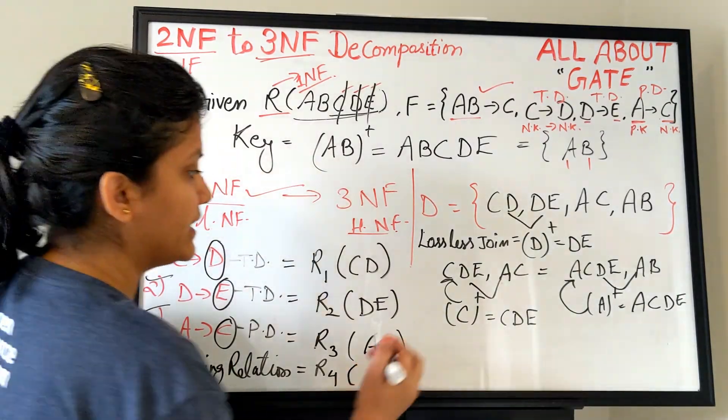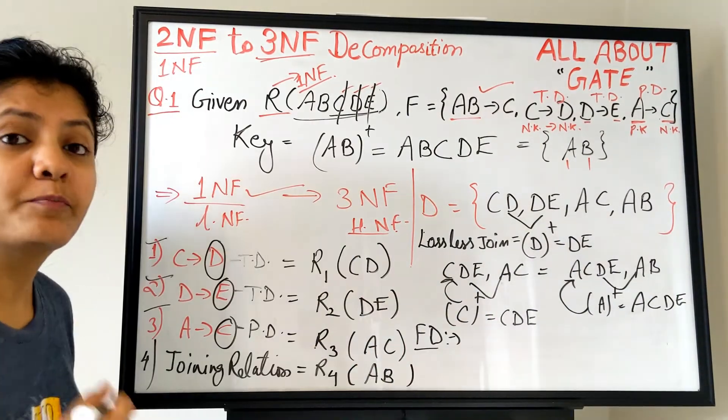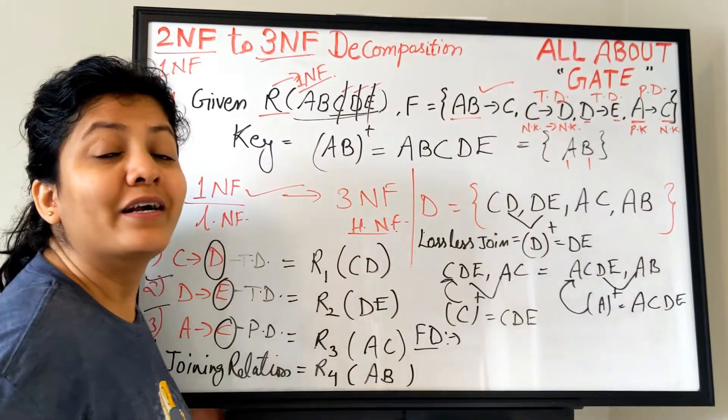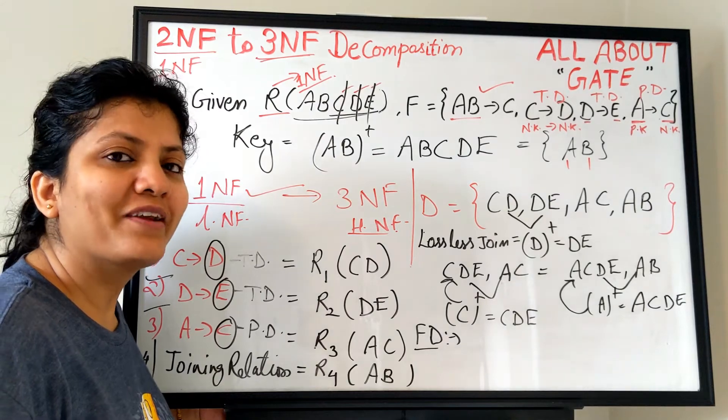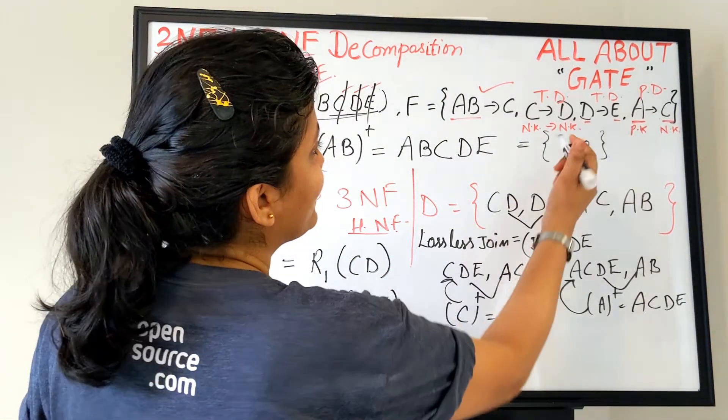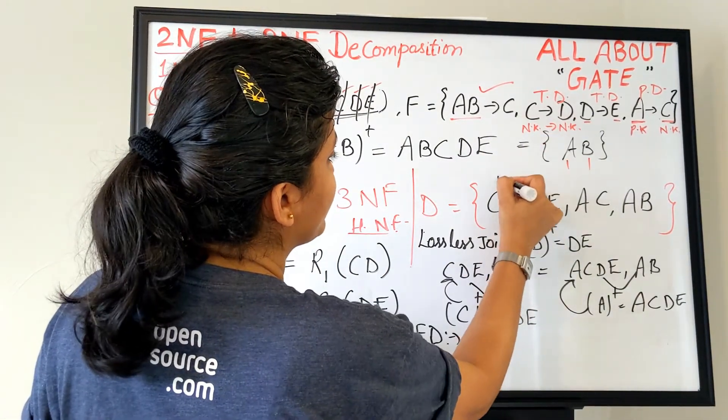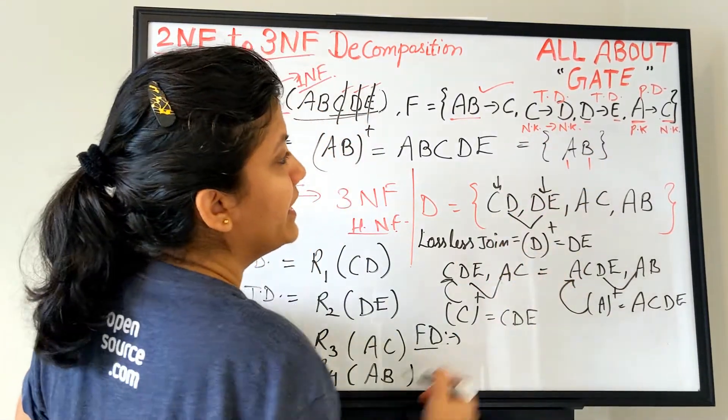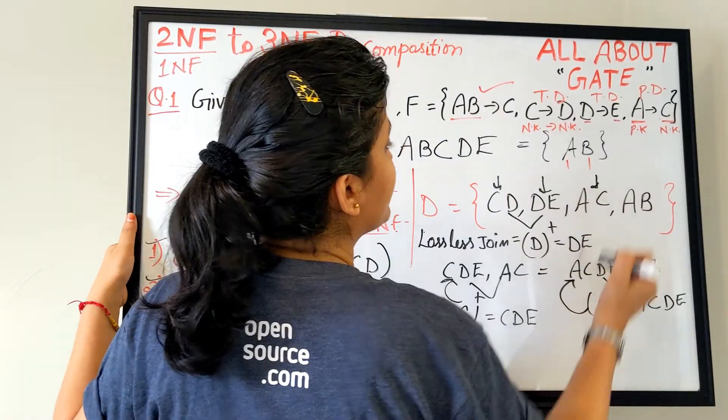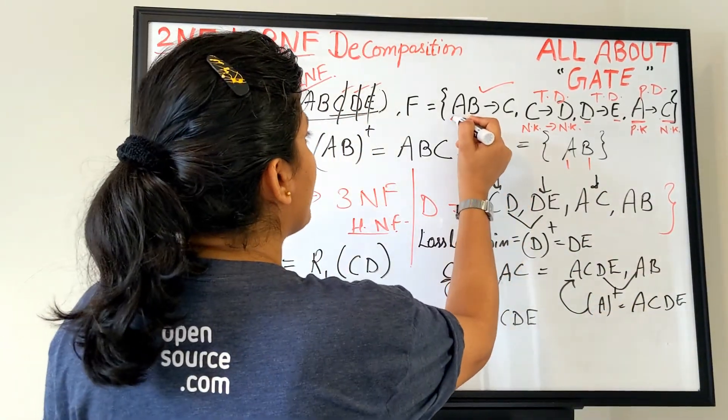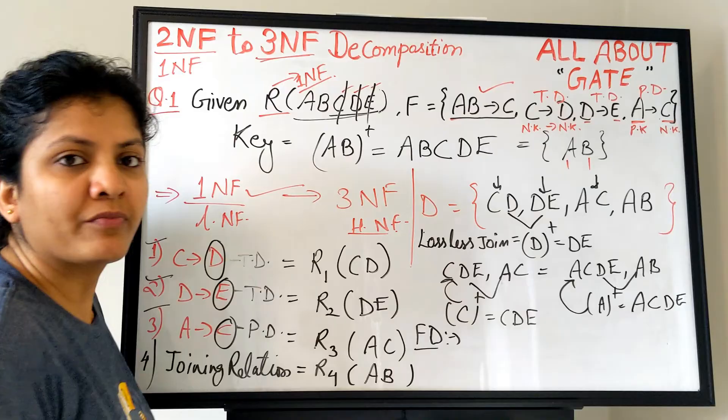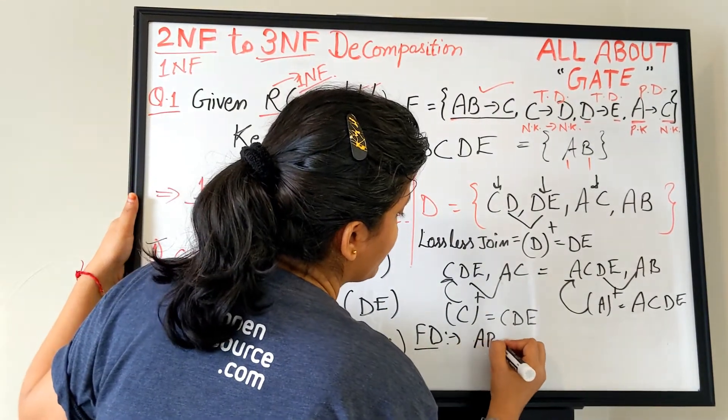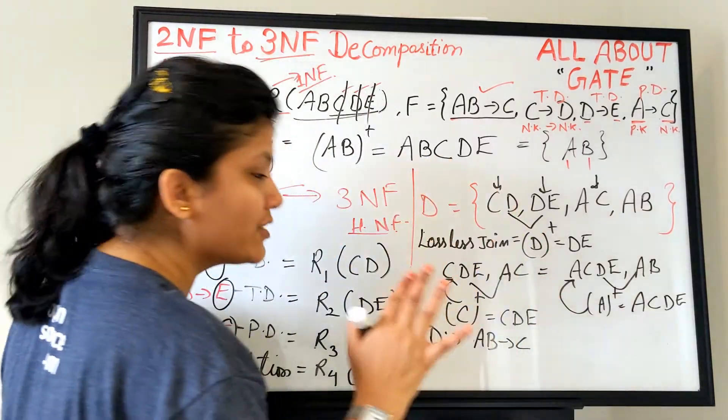The next, functional dependency. Is the FD set preserving all the dependencies or not? So the very first, the direct method, that is the eye-blink method. C to D, you can see is present here. So this is present. D to E, you can see is present here. A to C, you can see is present here. Now you must be thinking, what about AB to C? AB to C, where is it present? If at all you doubt, if at all you doubt, you can check from the direct method. Though it is present, but I will still do this for you.